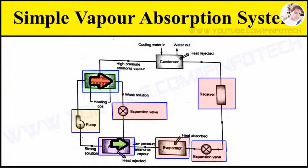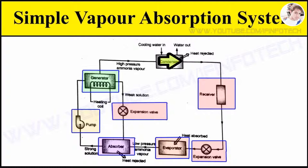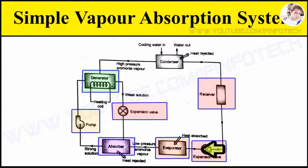The weak solution flows back to the absorber at low pressure after passing through the expansion valve. The high-pressure ammonia vapor from the generator is condensed in the condenser to high-pressure liquid ammonia. This liquid ammonia is passed through the expansion valve and receiver, and then to the evaporator, completing the simple vapor absorption cycle.